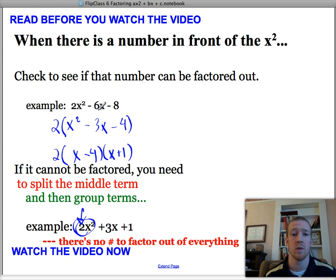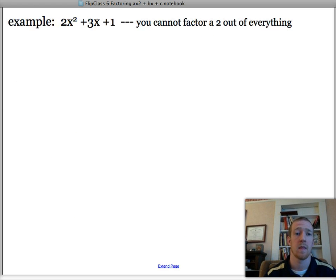What we do is we split the middle term, split this 3x into two pieces, and then we're going to group the terms. So you'll see what I mean on this slide. So here's that same equation. What we're going to do is we're going to go back to making that table, and they need to multiply and add to something, right?